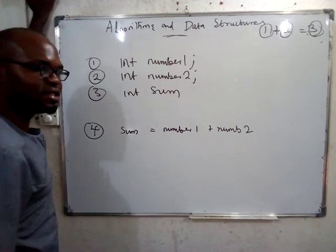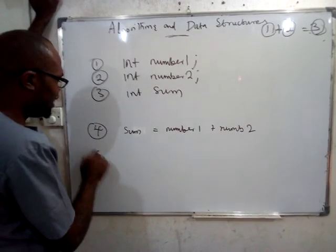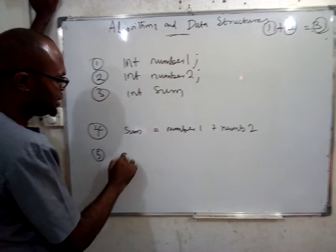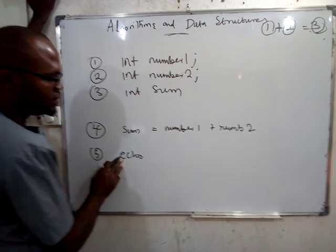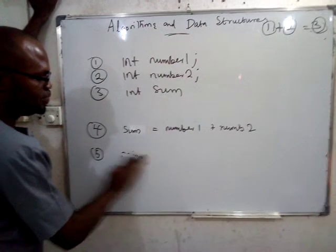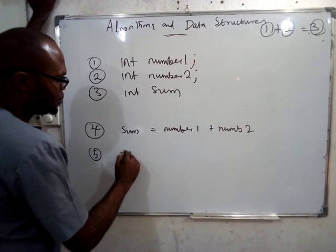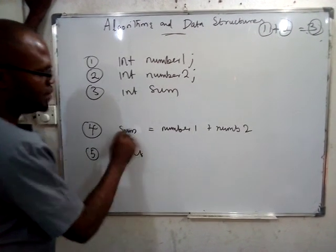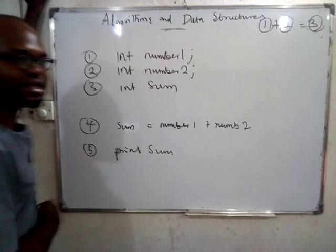After getting the sum, step four: do the summation by saying sum is equal to number one plus number two. Step five: print the sum — echo it out so that people can see it.